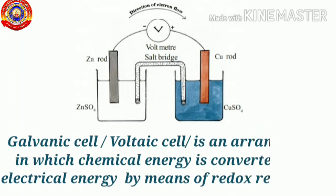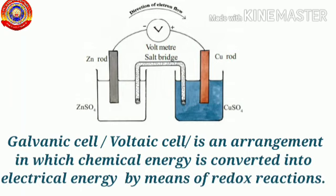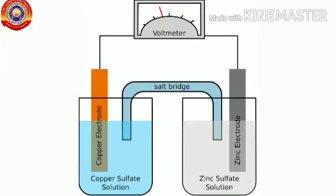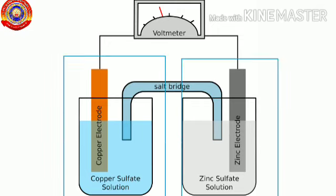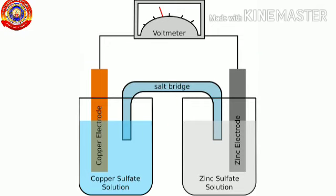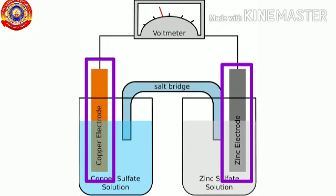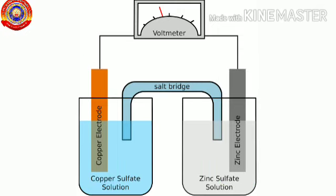A galvanic cell, otherwise known as voltaic cell, is an arrangement in which chemical energy is converted into electrical energy by means of redox reactions. Let's see the parts of a galvanic cell. A galvanic cell consists of two half cells and a salt bridge. Each half cell further consists of a metallic electrode dipped into an electrolyte. These two half cells are connected to a voltmeter with the help of metallic wires.